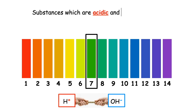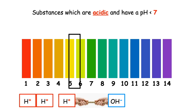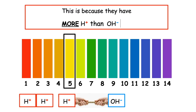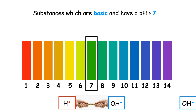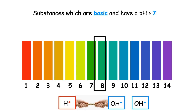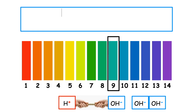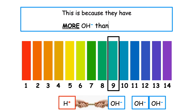Substances which are acidic have a pH less than 7. What we can see from this diagram is that they have more H+ ions than OH- ions. If we think about this like the tug of war, there are more players on the left-hand side, which pulls the pH below 7. Substances which are basic have a pH greater than 7. This is because they have more OH- ions than H+ ions — more hydroxide ions on the right-hand side of the tug of war.